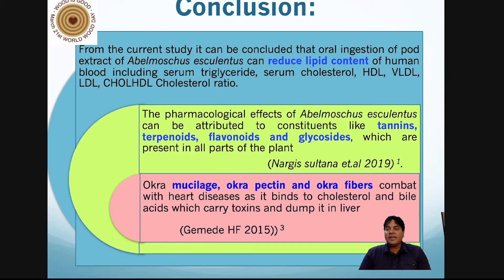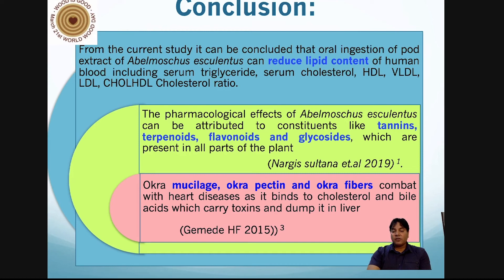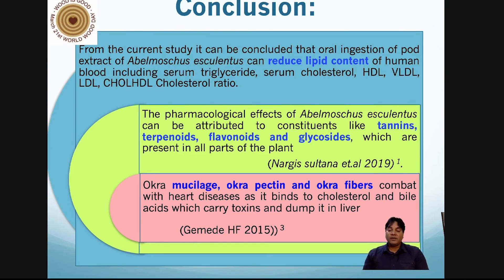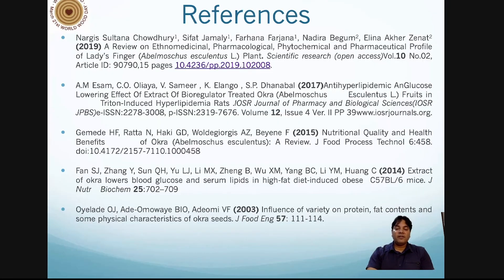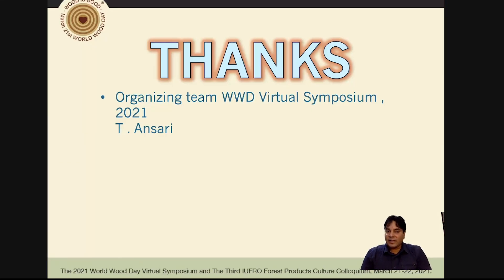In conclusion, oral ingestion of the pod extract of Abelmoschus esculentus reduces lipid content — including cholesterol, HDL, VLDL, LDL — and corresponding ratios in the lipid profile. These results coincide with previous workers who examined tannins, terpenoids, flavonoids, and glycosides responsible for the pharmacological effects of Abelmoschus esculentus. Certain substances found in okra pods — mucilage, pectin, and okra fibers — combine with cholesterol and lipids and carry them to the liver, which then removes the extra cholesterol from the body. Thank you to the organizing team of the World Vote Day Virtual Symposium 2021.